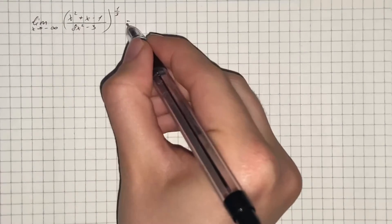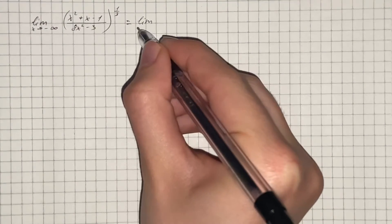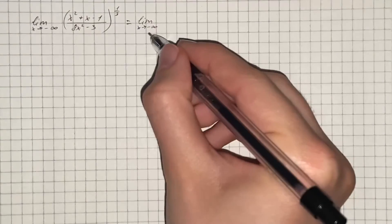We have to evaluate the given limit. First, we're going to take out x squared from the numerator and denominator.